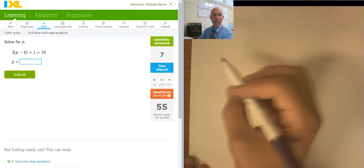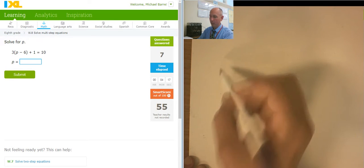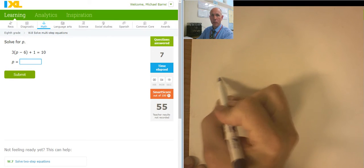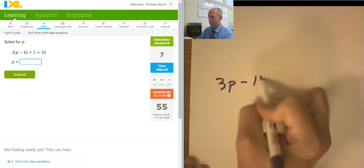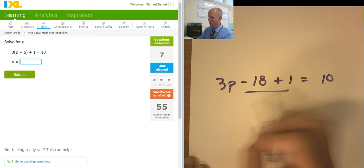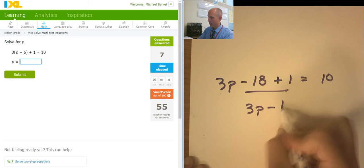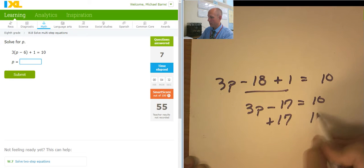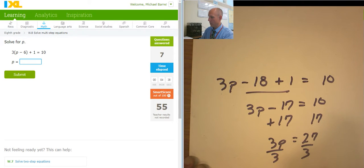Okay. A little distribution and combining like terms. So I have... I'm going to do the distribution 3p minus 18 plus 1 equals 10. Plus 1 equals 10. We'll combine those. So 3p minus 17 equals 10. Adding 17 to both sides. 3p equals 27. Dividing both sides by 3. P equals 9.